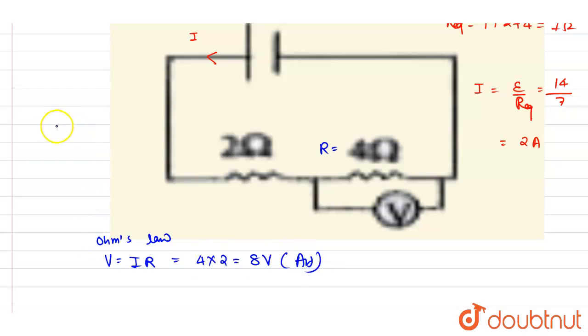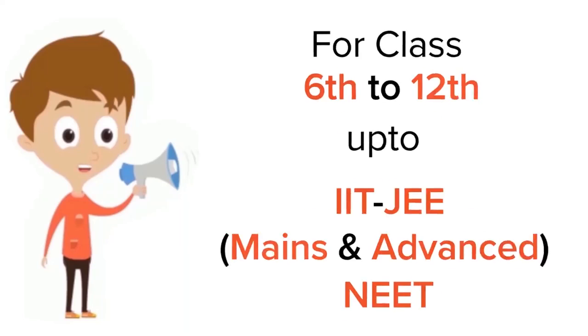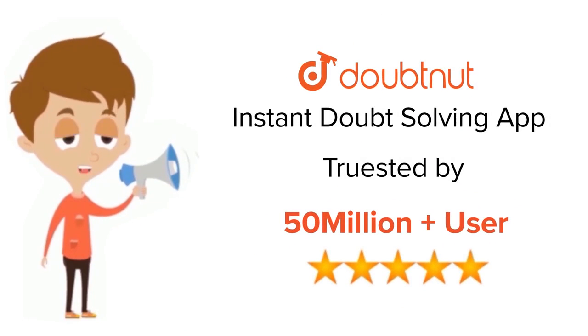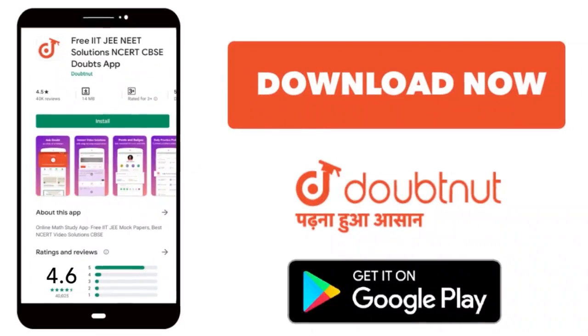The potential drop across this four ohm resistance will be eight volt. Thank you. For class 6th to 12th, IIT-JEE and NEET level, trusted by more than five crore students, download Doubtnet app today.